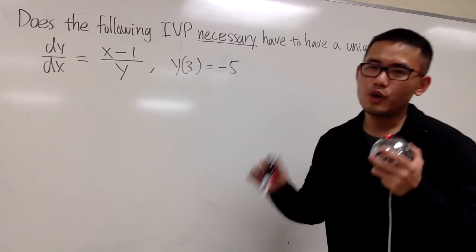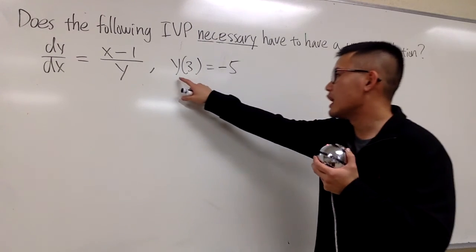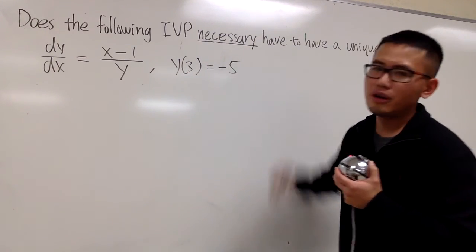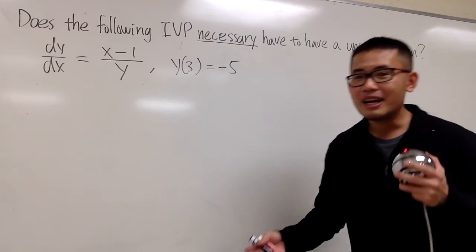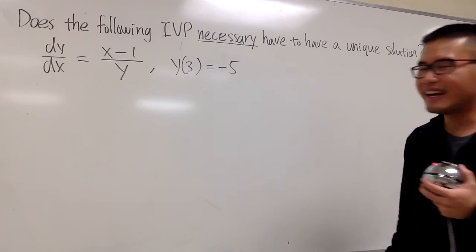Okay, many of you guys may be wondering, what if we change the initial value from the previous example to become y(3) = -5 instead of the 0 right here? What will happen? I know you know what will happen, but let me just put it on the board for you guys.